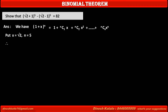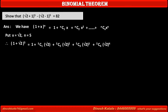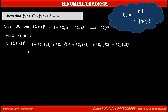Therefore, by using the above binomial expansion, we get (1 + √2)^5 equal to: first term 1, plus second term 5C1·(√2)^1, plus third term 5C2·(√2)^2, plus fourth term 5C3·(√2)^3, plus fifth term 5C4·(√2)^4, plus last sixth term 5C5·(√2)^5.